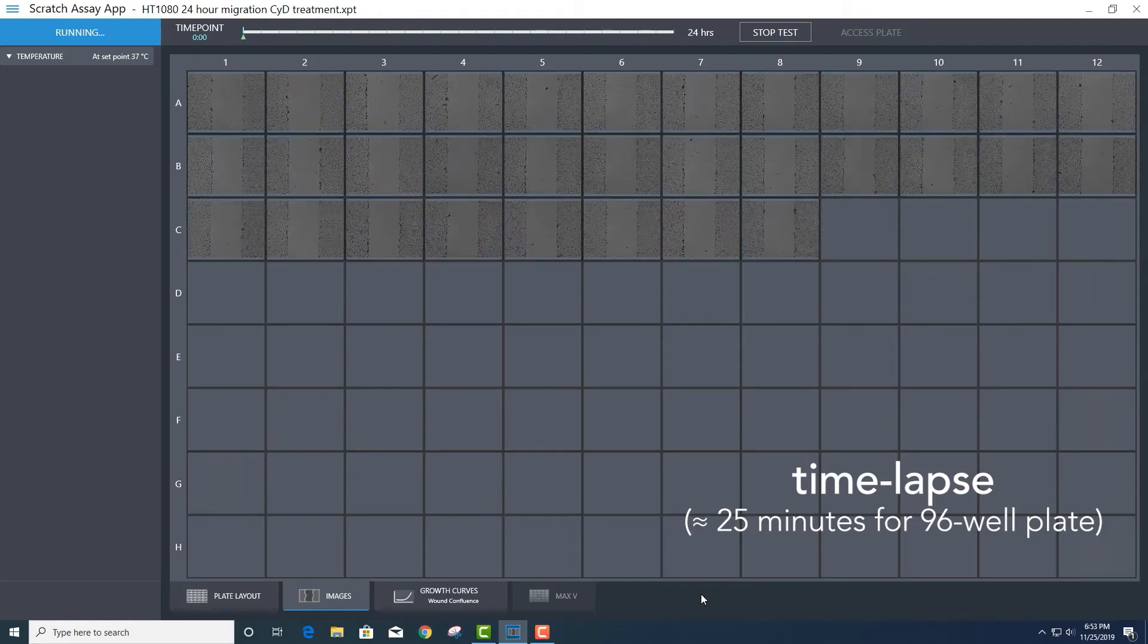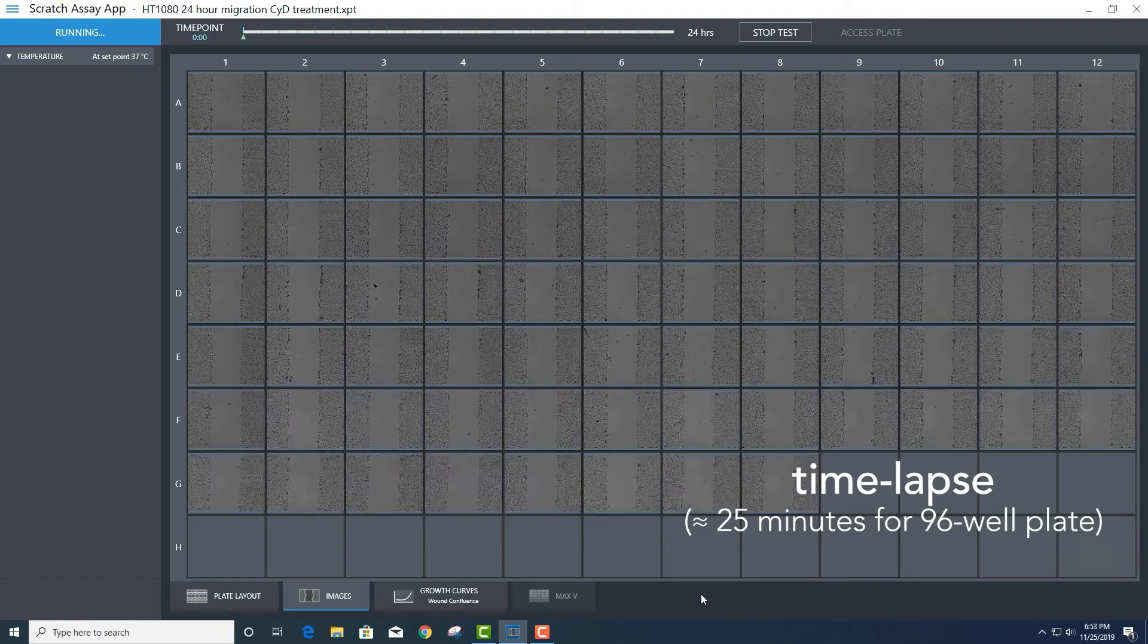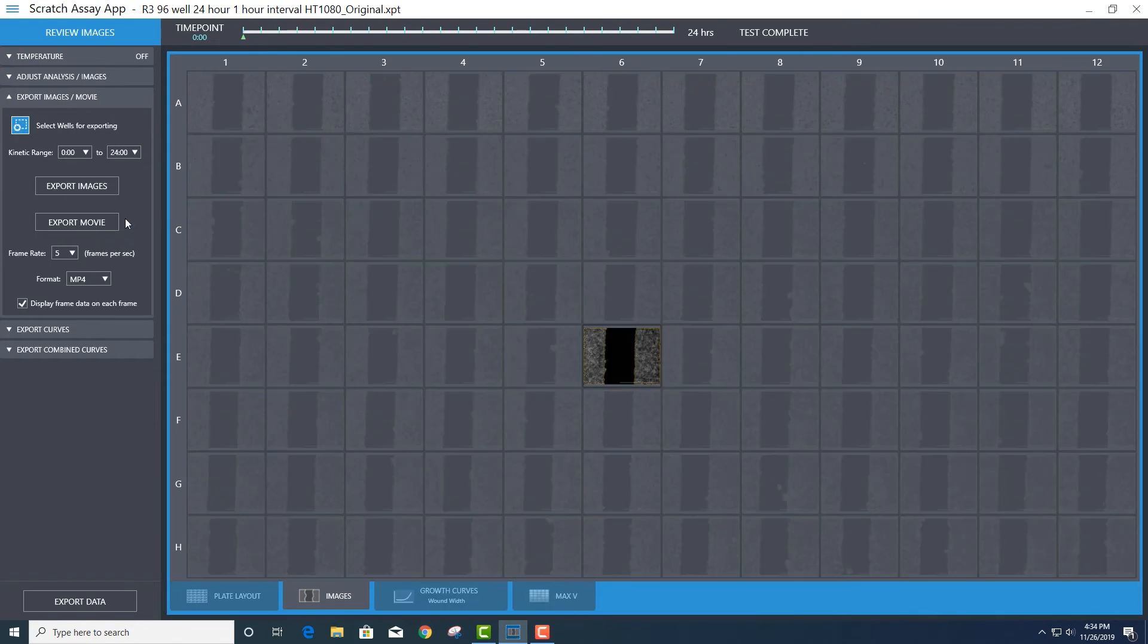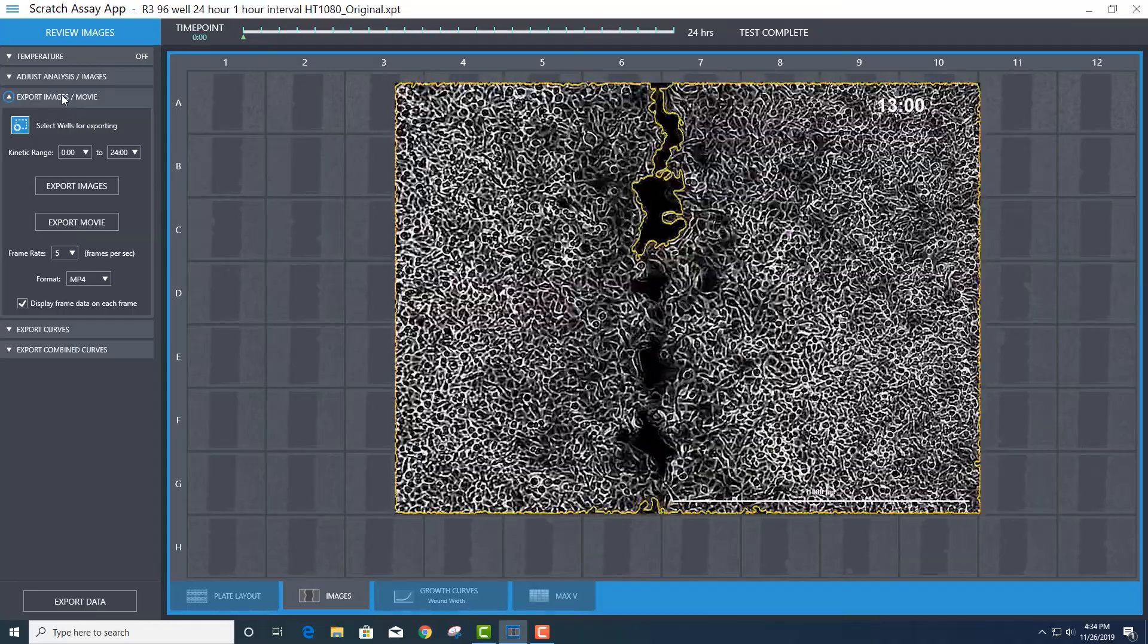Once the assay is started, images are automatically acquired using optimized exposure settings and focus. Powerful image analysis tools are used to generate reproducible quantitative results with kinetic cell migration profiles reported in real time.